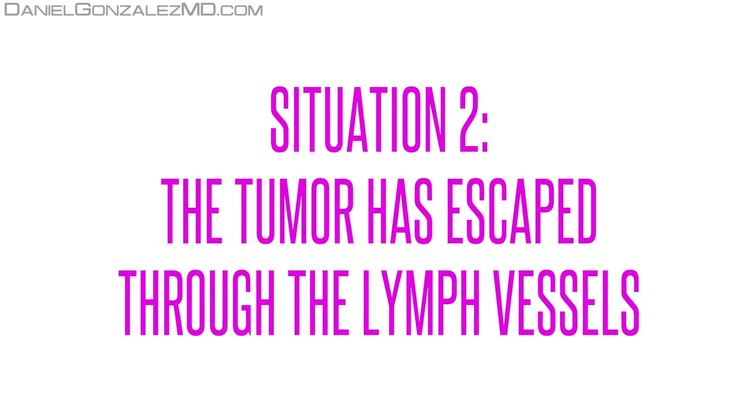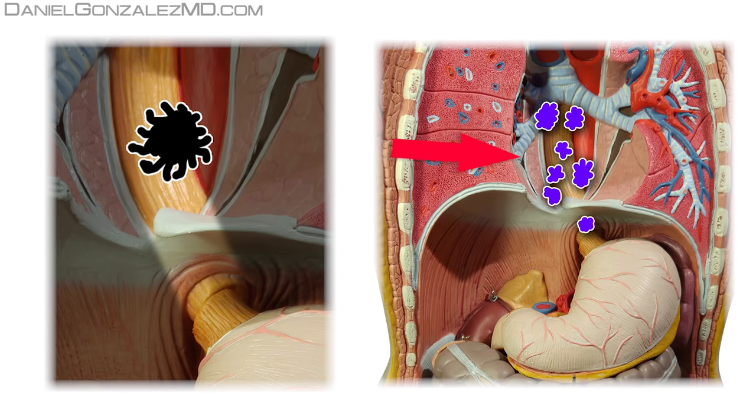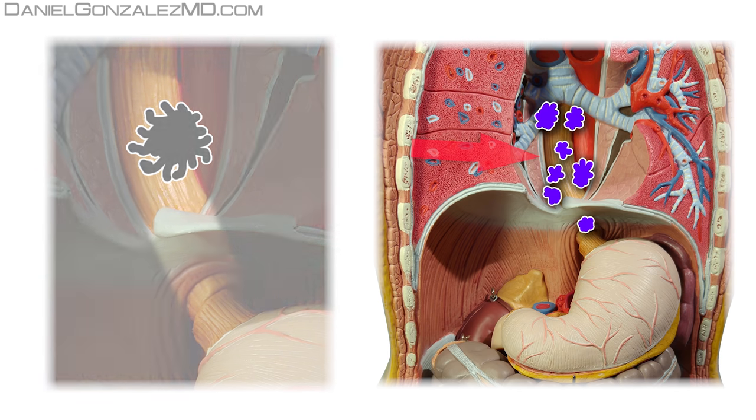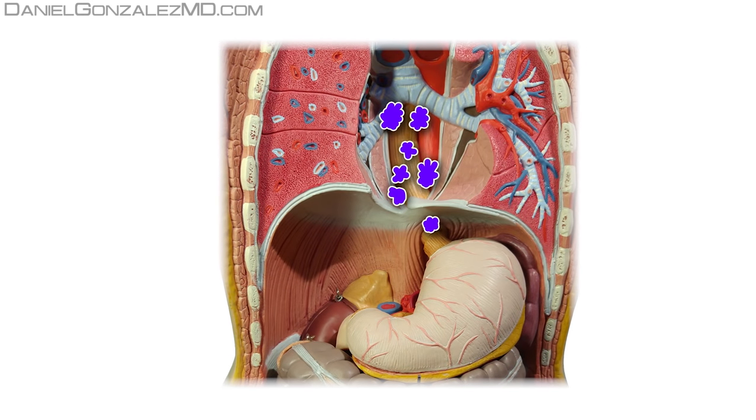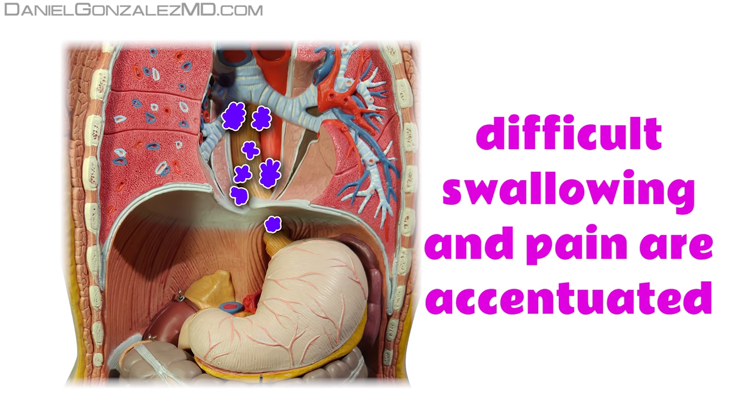Situation 2: The tumor has escaped through the lymph vessels. The cells of esophageal cancer, when choosing the lymphatic route to escape the body, tend to accumulate first on the nodes of the esophageal wall and those around the esophagus itself. Because of this accumulation of tumor cells, symptoms of difficulty swallowing and pain caused by the cancer itself are accentuated.